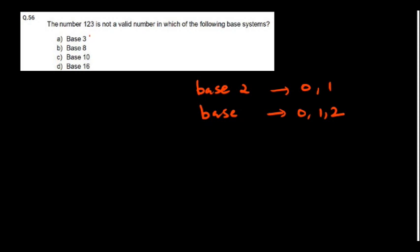In base 8, the valid digits are 0, 1, 2, 3, 4, 5, 6, 7 — up to 7. So the digit 3 alone is valid in base 8.